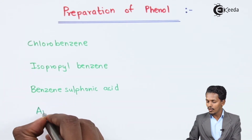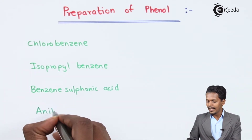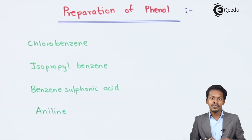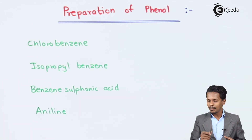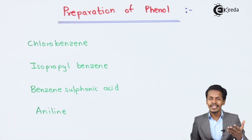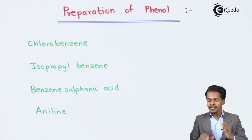We can also prepare phenol from aniline by doing a diazotization process. So these are the four methods that I'm going to talk about in the next lecture.